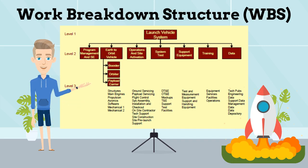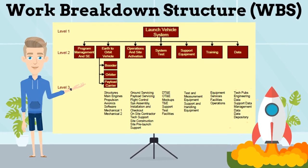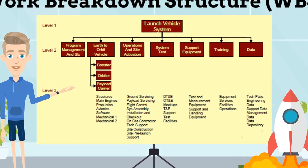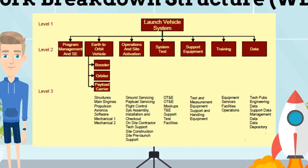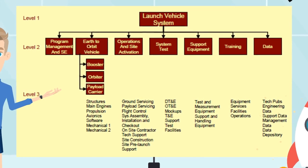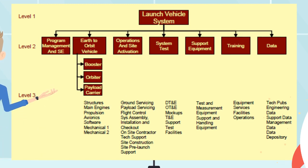Here is an example of the work breakdown structure from a rocket program. This WBS shows the first three levels of the rocket project. The government or customer program manager, with the support of systems engineering, usually develops the first three levels of the program WBS. They then provide it to the contractors who further define the WBS into more discrete elements.